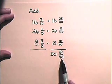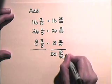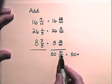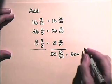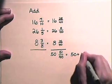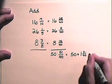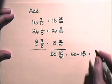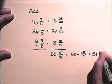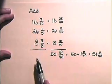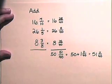We have an improper fraction here. So, we can say that 50 and 51 fortieths is 50 plus 1 and 11 fortieths. Combining these, we have 51 and 11 fortieths. So, the sum of these mixed numbers is 51 and 11 fortieths.